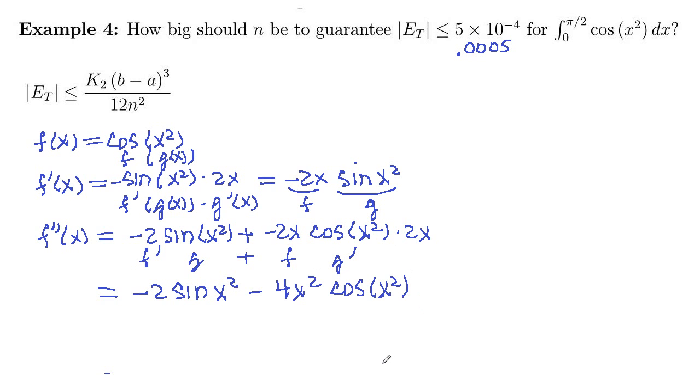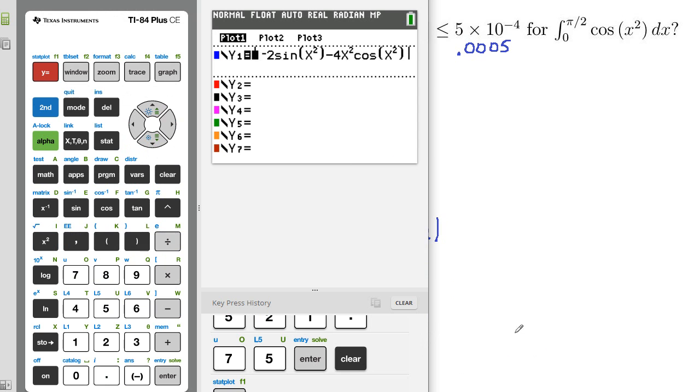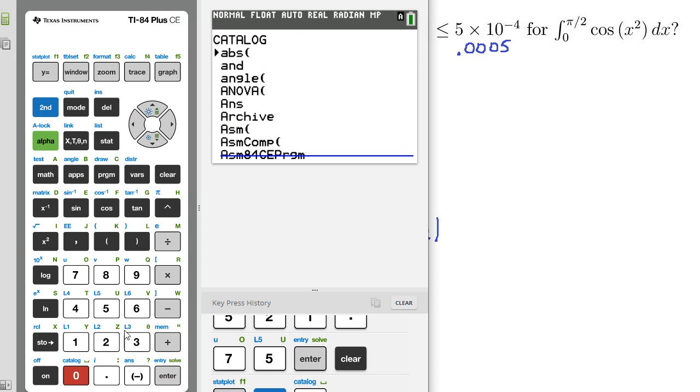So there's our second derivative. This is fairly cumbersome to overestimate numerically. We actually want to overestimate the absolute value. So you need absolute values around that second derivative, because we've got some negative values in there. And the easiest way to do that is just to enter this function into your calculator. And I've already done that here. The absolute values I got from doing second catalog, and then that first function, absolute value.